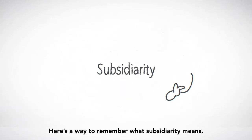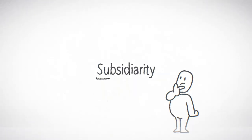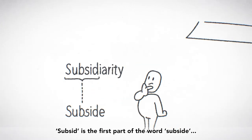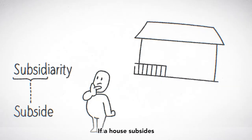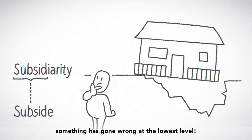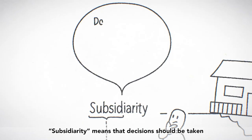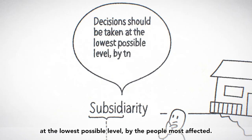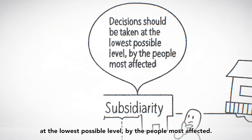Subsidiarity. Here's a way to remember what subsidiarity means. Subsid is the first part of the word subside. If a house subsides, something has gone wrong at the lowest level. Subsidiarity means that decisions should be taken at the lowest possible level by the people most affected.